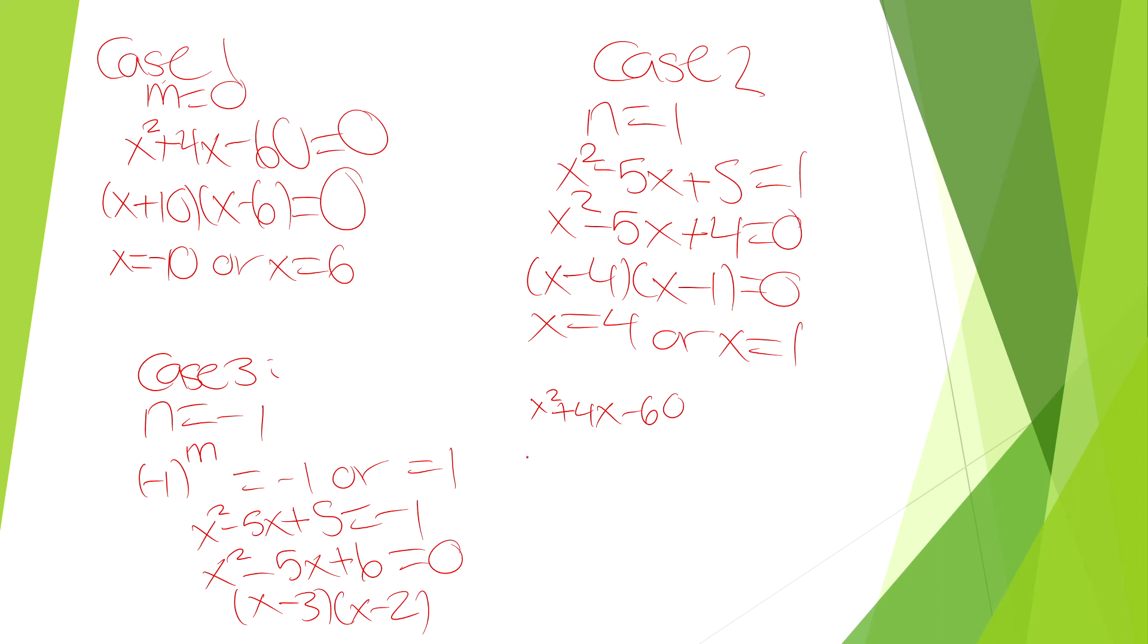So 2² + 4(2) - 60, we know that will equal an even number because 2² is an even number. Even plus even is always even and even minus even will always be even. So this will be even.